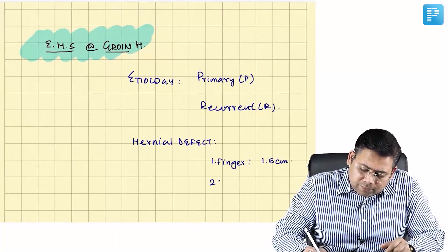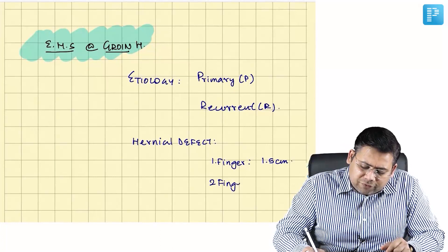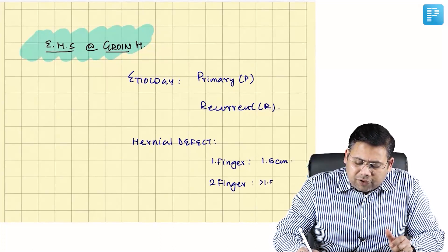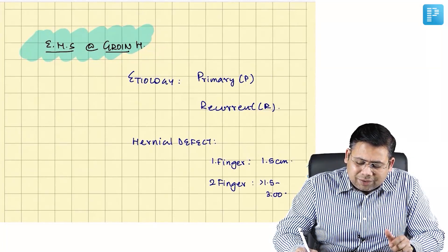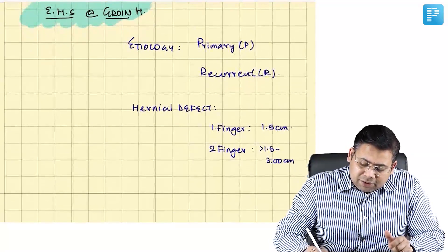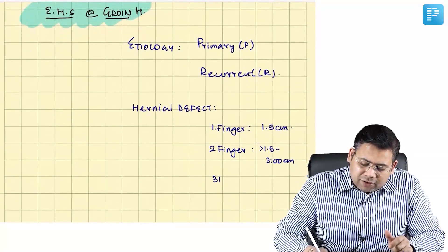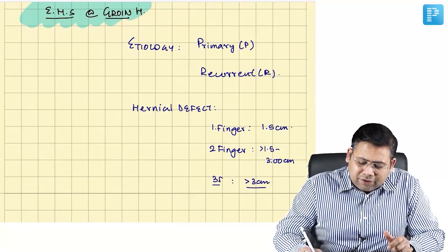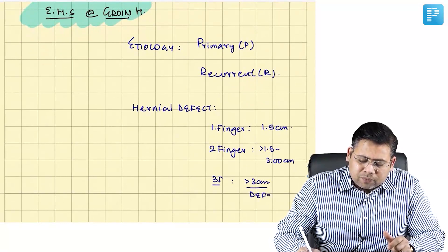Two finger breadth defect means more than 1.5 cm up to 3 cm. Three finger breadth defect means more than 3 cm, written as three F.